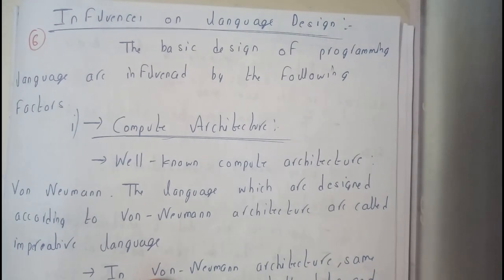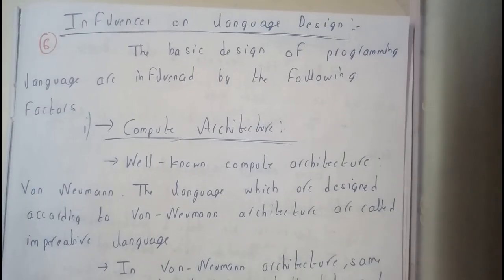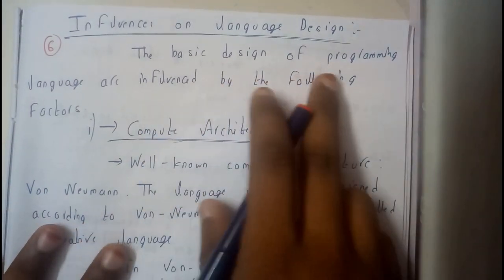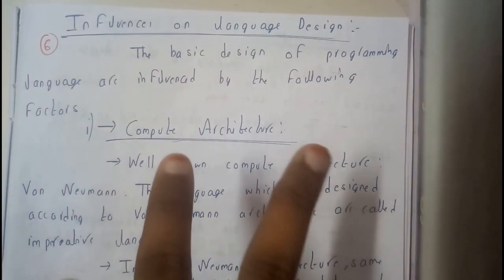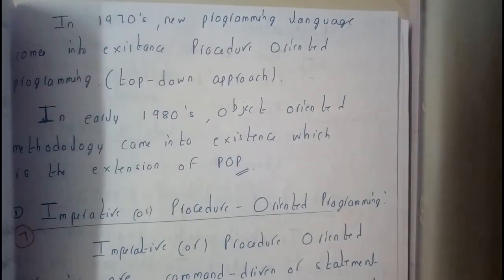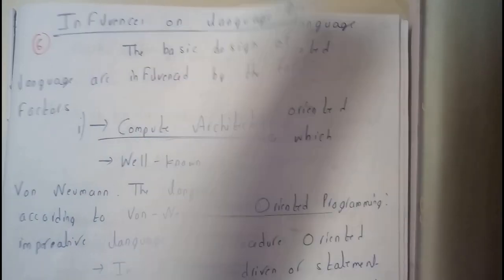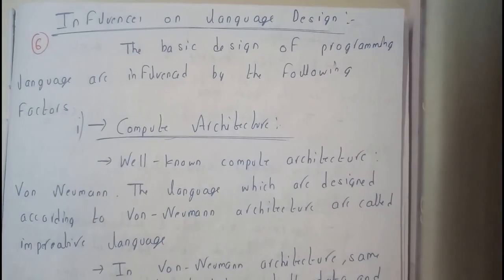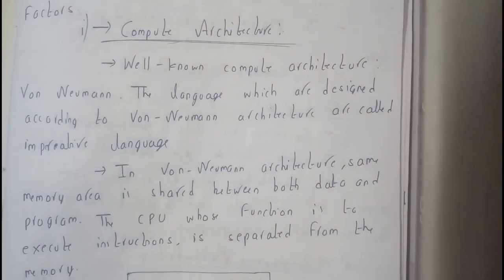Hello guys, we are back with our next tutorial. In this tutorial, let us see the influences of language designing. The basic design of a programming language is influenced by many factors. There are two main areas: computer architecture and programming methodologies, and we will be discussing both of these in this tutorial.